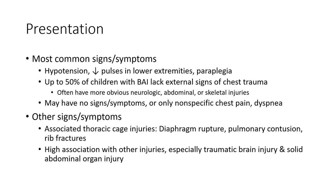Most common signs and symptoms include hypertension, decreased pulses in the lower extremity, and paraplegia. Up to 50% of children with blunt aortic injury lack external signs of chest trauma. Those with more obvious neurological problems, minor musculature injury, may have no signs or symptoms, or only nonspecific chest pain.